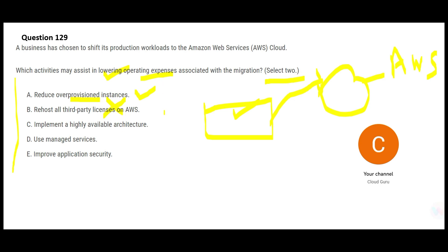Option C says implement a highly available architecture. If you make a highly available architecture, it will increase your operating expenses, not decrease them — there is no free lunch. A system available 365 days a year costs a lot of money, just as Amazon.com spends heavily to keep their applications highly available. So C is wrong. Option D says use managed services — managed services will lower operating expenses because you don't have to manually tune resources; managed services handle it automatically. So D is my second answer.